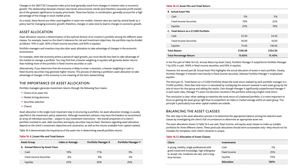Portfolio managers and investors may also alter asset allocation to take advantage of changes in the economic environment. For example, when the economy enters a period of rapid growth, a heavier weighting in equities may generate better returns than holding more in fixed income securities or cash. Alternatively, if you determine that the economy is likely to enter a recession, a heavier weighting in cash or fixed income securities may generate higher returns. This process of altering a portfolio's asset allocation to take advantage of changes in the economy is one meaning of the term market timing.